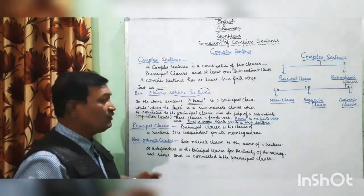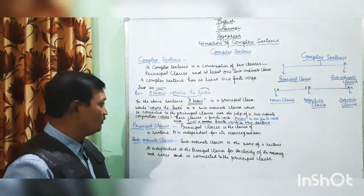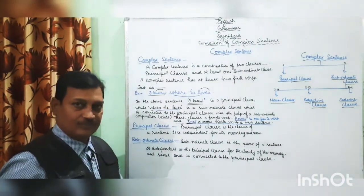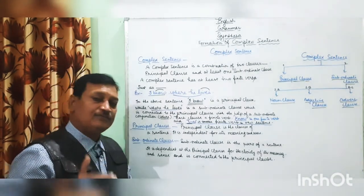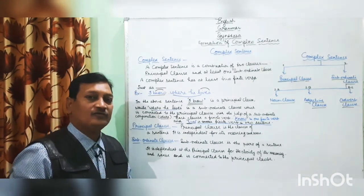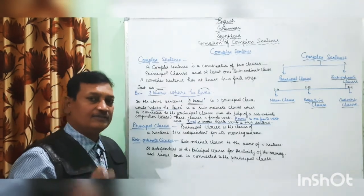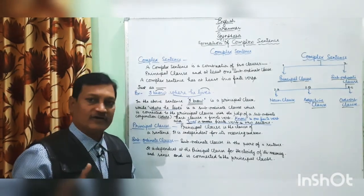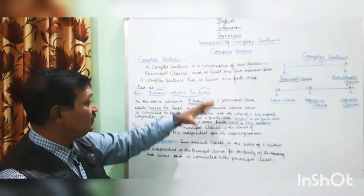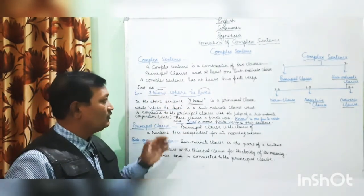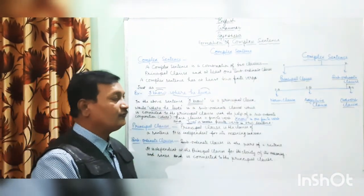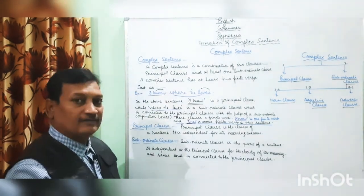Let's know what a principal clause is. A principal clause is the clause of a sentence that is independent for its meaning and sense. In other words, a principal clause is not dependent on any clause for its meaning and sense. I can tell you more clearly with the help of a diagram, so that we can easily understand the complex sentence.